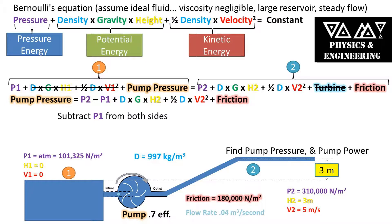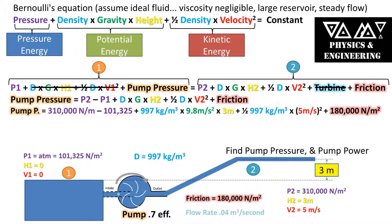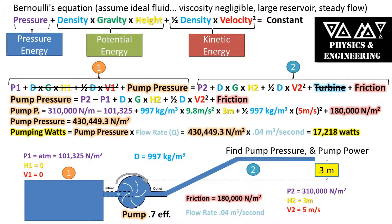Now we want to get pump pressure to one side so we can subtract P1, which is the atmospheric pressure, from both sides of the equation. Now we can plug in all of our values into this equation to get the pump pressure. We get a pump pressure of 430,449 newtons per meter squared or pascals.